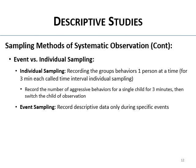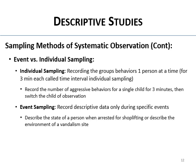Event sampling is recording your descriptive data only when specific events are happening — sometimes that's all you can do. For example, if you're interested in shoplifters when they're arrested, or want to describe the environment of a vandalism site, you can only sample when shoplifting or vandalism has occurred.